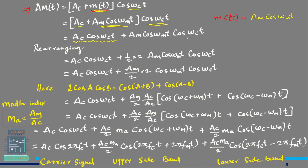Now let us derive the expression for the modulated signal. AM(t) equals Ac cos(ωc t) plus Am cos(ωm t) times cos(ωc t). We have two cosine terms multiplied, so using the identity 2 cos A cos B = cos(A+B) + cos(A−B), the term Am cos(ωm t) cos(ωc t) becomes (Am/2) times [cos(ωm t + ωc t) + cos(ωc t − ωm t)].